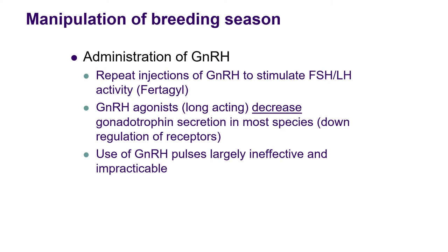Recent research has essentially said we don't know why this suppression really occurs — whether it's because you're overwhelming the receptors or down-regulating them — but the fact of the matter is that it does not work. Whether you give GnRH in pulses, in large doses, or in implants, it's ineffective and impracticable. I include it here because it logically makes sense that if you give artificial pulses of GnRH you should be able to activate that axis. In effect, it doesn't really work. So you can now completely forget about this one, but it's there just for your background knowledge.